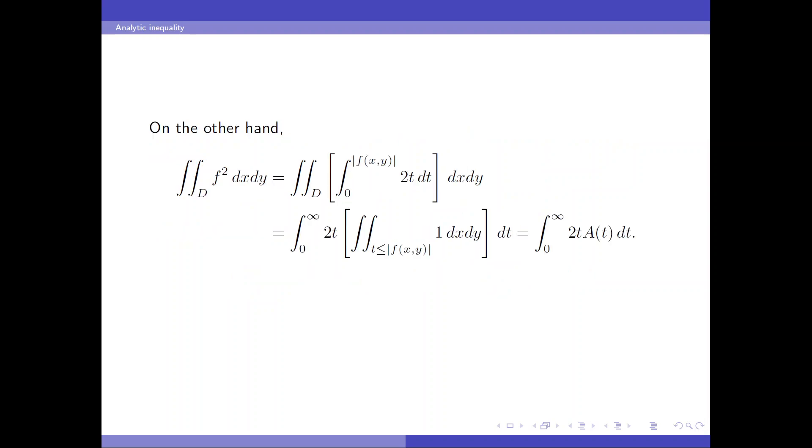On the other hand, we can compute the L2 norm of f by first integrating 2t from 0 to the absolute value of f. Then integrate over the region. And using Fubini theorem, we first integrate 1 over the superlevel set and then integrate with respect to t. And this is another integral of A(t). And some non-trivial calculus using A(t) is decreasing in t yields the Sobolev inequality.